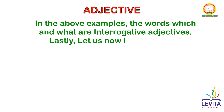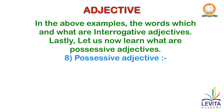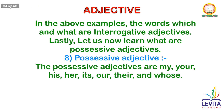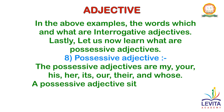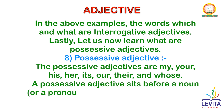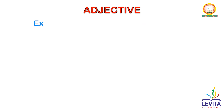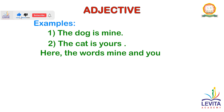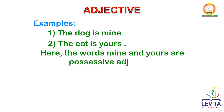Lastly, let us now learn what possessive adjectives are. The possessive adjectives are my, your, his, her, its, our, their, etc. A possessive adjective sits before a noun or a pronoun to show who or what owns it. Here are a few examples: The dog is mine. The cat is yours. Here, the words mine and yours are possessive adjectives.